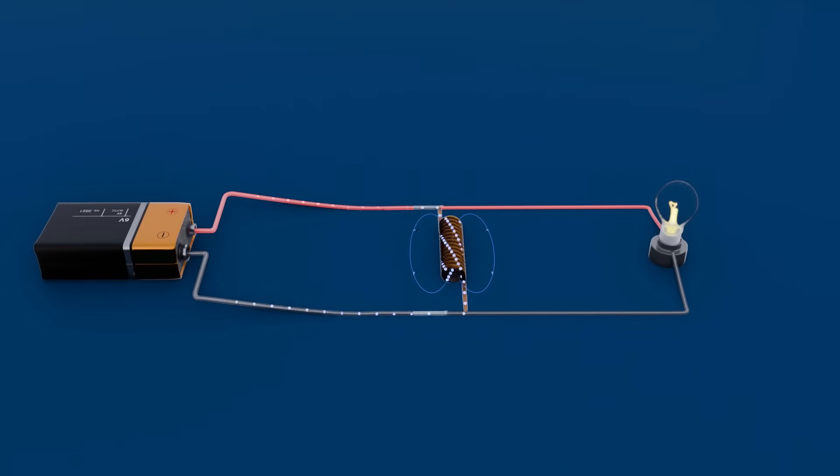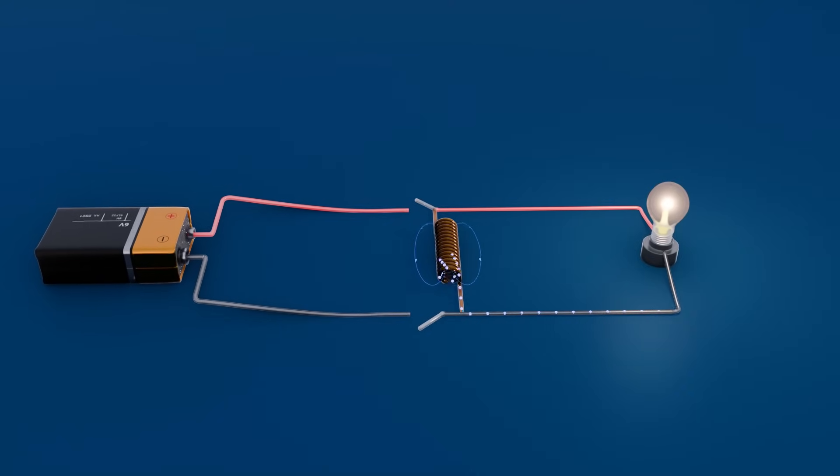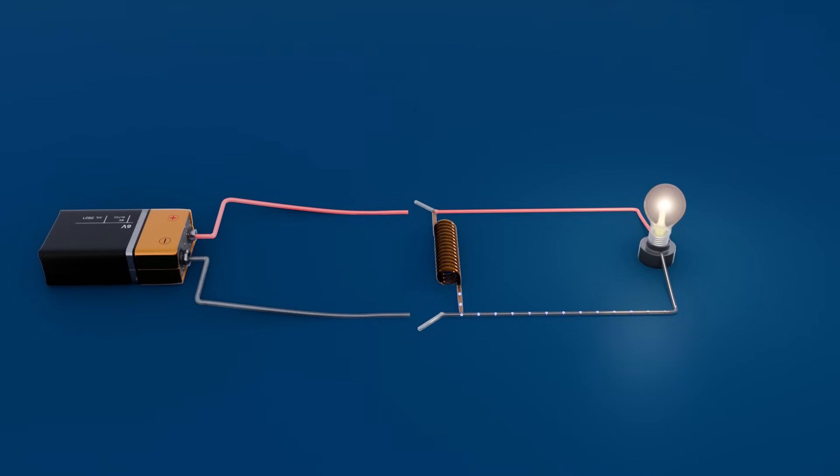If we then disconnect the power source, the inductor will continue to push the current through the bulb until the resistance dissipates most of the energy remaining.